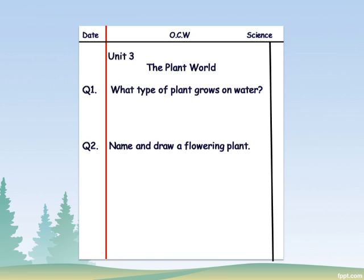Question one is: what type of plant grows on water? Name a plant that grows on water. Question two is: name and draw a flowering plant — name it and also draw it.